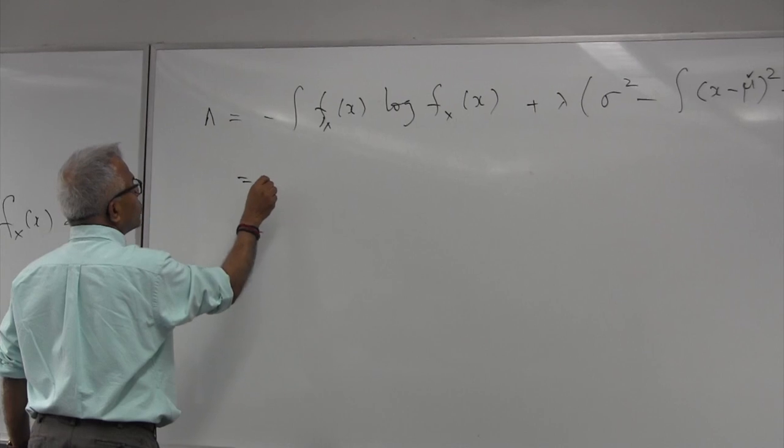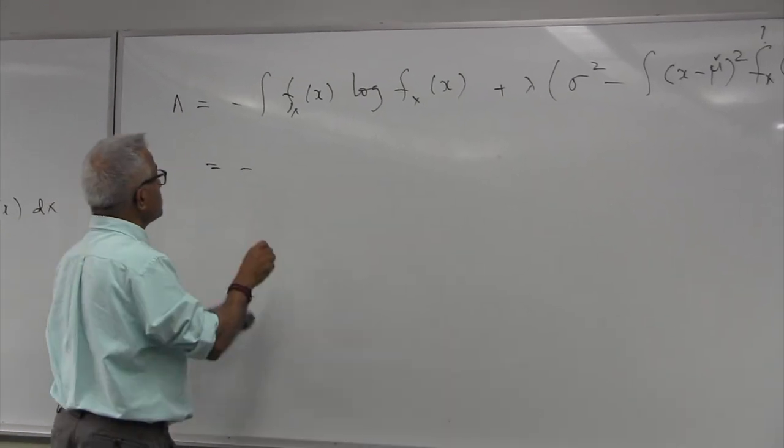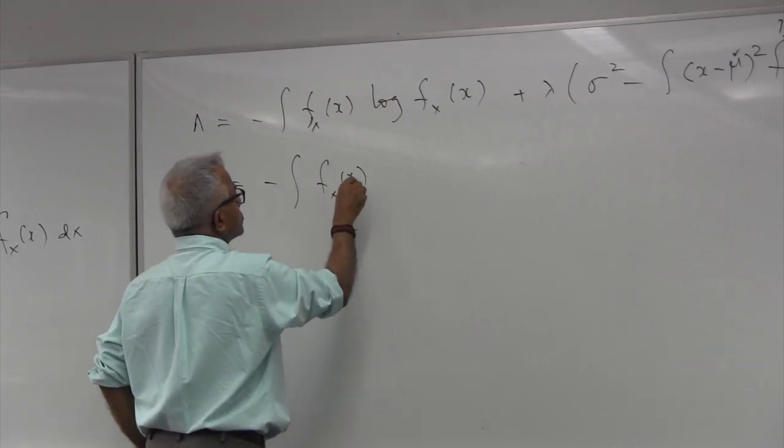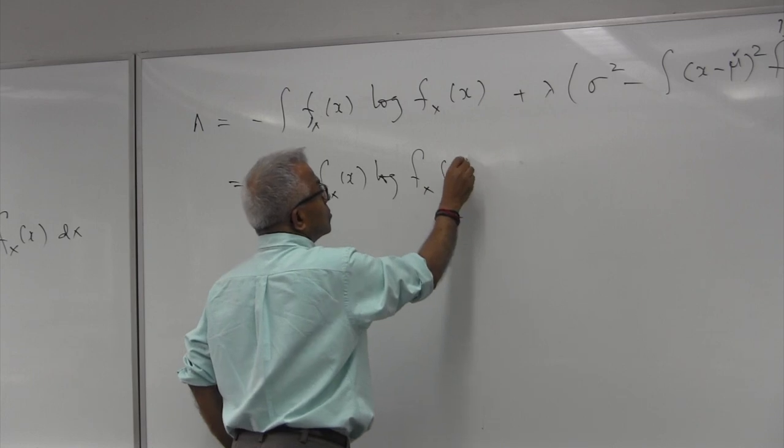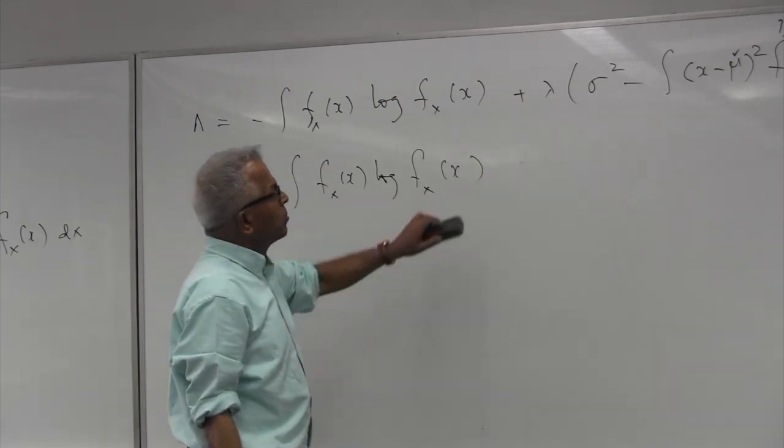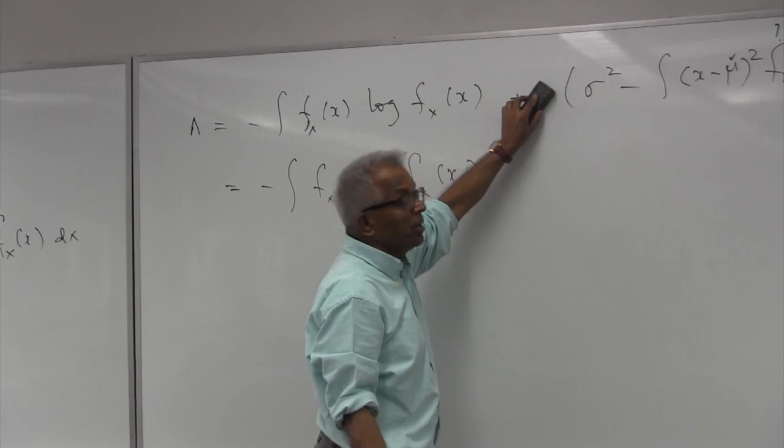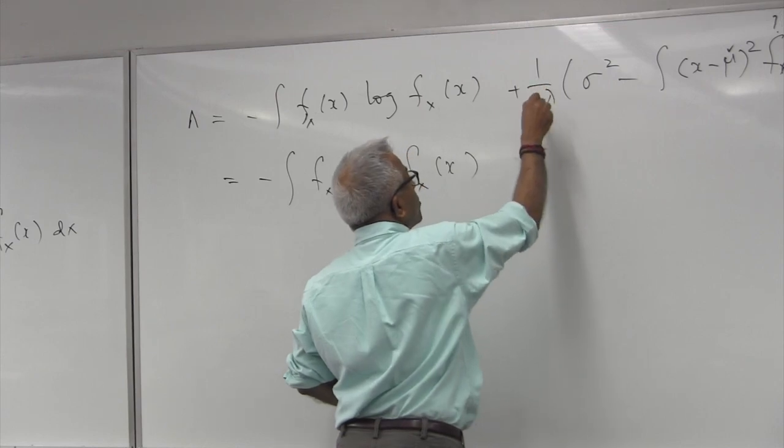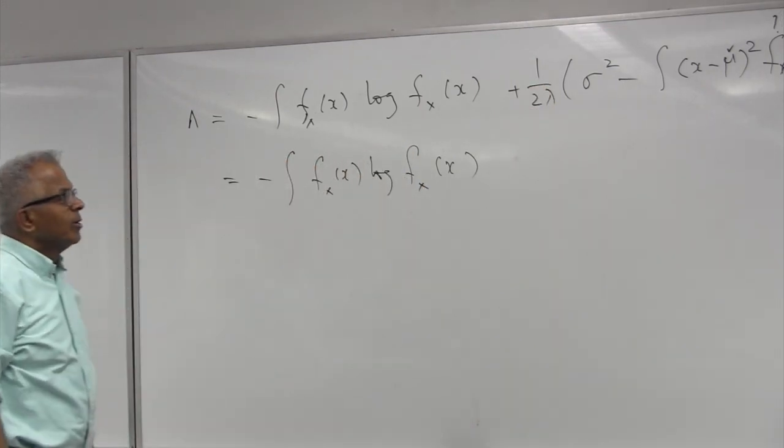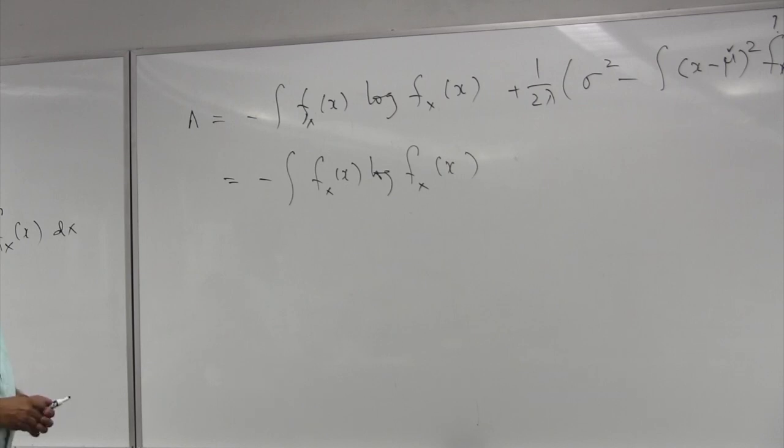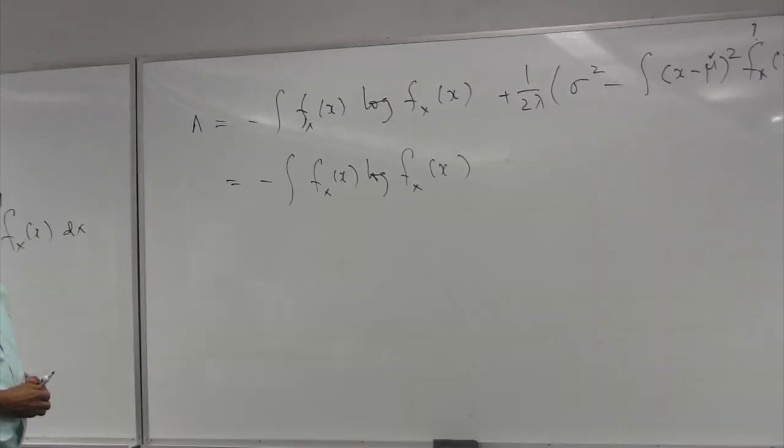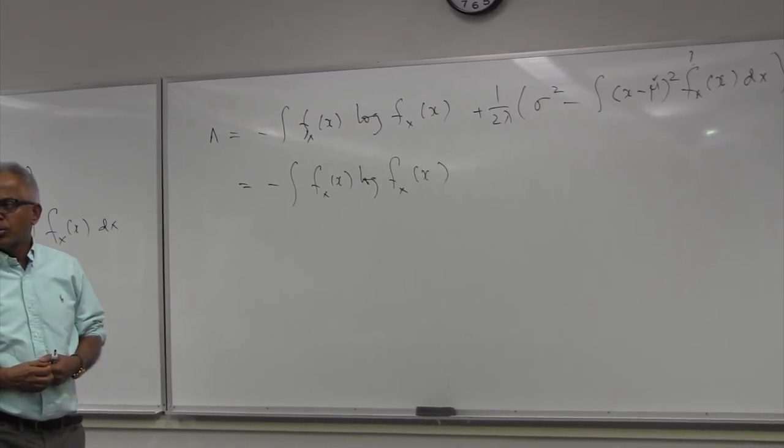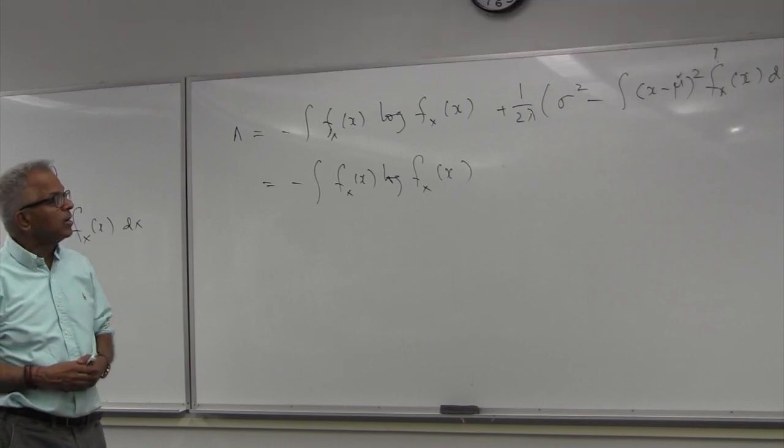I can rewrite this before I do this as integral. And for reasons it will become clear. Remember, this is a constant. Let me, why not sit down? For reasons this will become clear. Let me write that constant as 1 over 2 lambda. You don't have to, or 1 over 2 mu. You don't have to. Just a constant. You can turn it upside down.